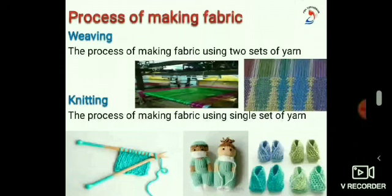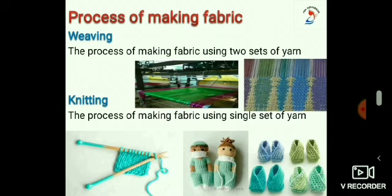Fabric is also made by the process of knitting. Have you seen someone making a woolen sweater? It is done by interlocking loops of woolen yarn — this method is called knitting. Weaving needs a set of two or more yarns; however, knitting can be done by a single yarn or a group of yarns. Knitting needles are used to make fabrics by hand on a small scale. In factories, knitting is done using machines.